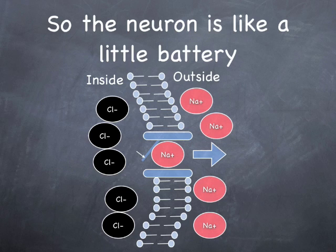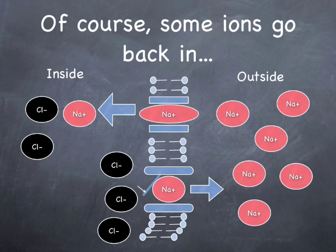So what happens is, after a while, it shoves more sodium ions outside of the neuron than are inside the neuron. And so the neuron becomes like a little battery. It becomes charged. So they actually can acquire a charge on its membrane, which is very, very interesting.